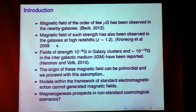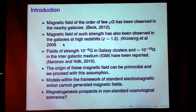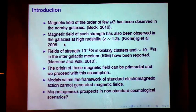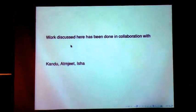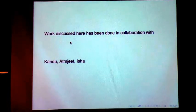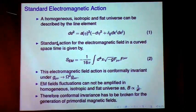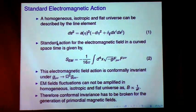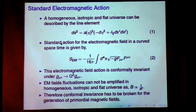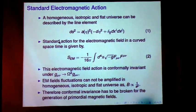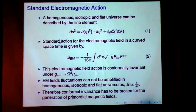Now, in the framework of standard electromagnetic action, one cannot generate magnetic fields. And that is because of the conformal invariance of the electromagnetic action. So one will have to look at some non-standard scenarios to do this. The work discussed here has been collaboration with Kandu and Atmajit and also with Isha, who is also here. So in the standard electromagnetic action, we start with this Robertsonn-Walker metric. And in the standard electromagnetic action, we have the action of this form. Now, this action is conformally invariant. So that is g mu nu going to omega square g mu nu. The form of the action, the form of the Maxwell's equations remains invariant.